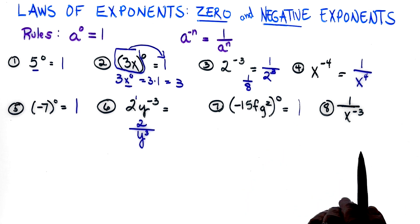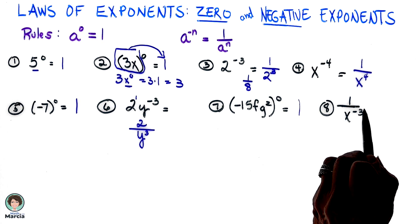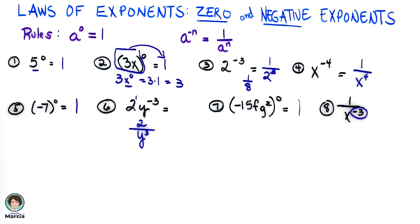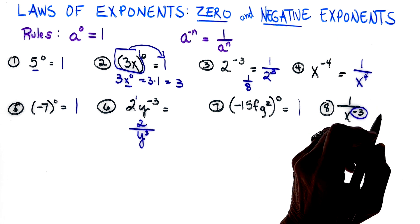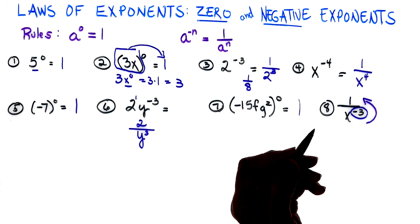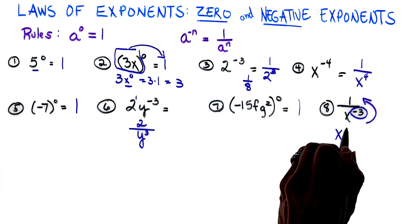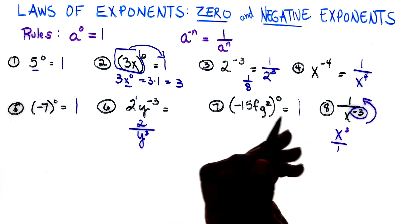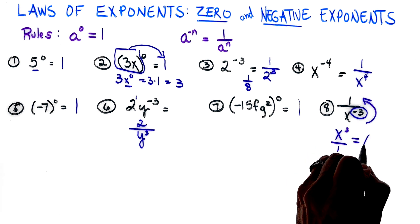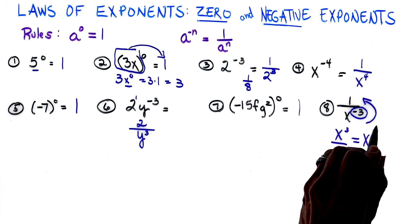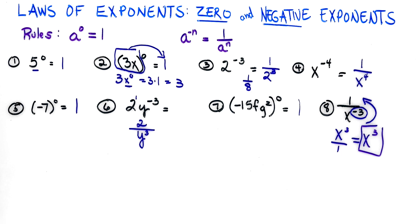And number eight is a little bit different from the rule. Notice we have a negative exponent here. Well, what happens is we're never allowed to have negative exponents in our final answer. So that means I'm going to have to write it as my numerator, so it would be x to the third, and it would be over one. But we know it's just x to the third, or x cubed—that's how you would see it written.